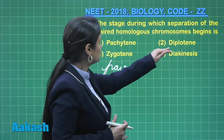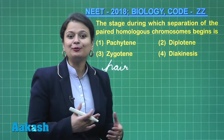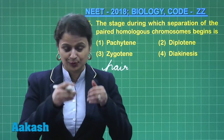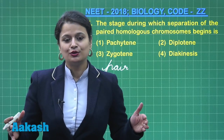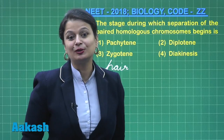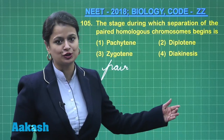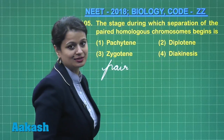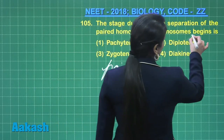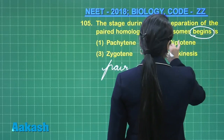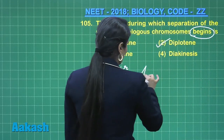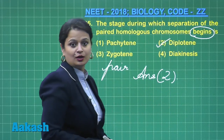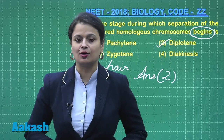Coming to diplotene — in this stage, the synaptonemal complex starts dissolving. Due to dissolution of the synaptonemal complex, separation of chromosomes begins, which further proceeds in diakinesis. So separation of chromosomes begins in the diplotene stage, and the right answer for this question is option number two.